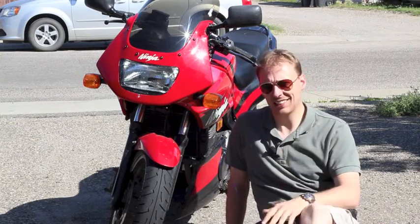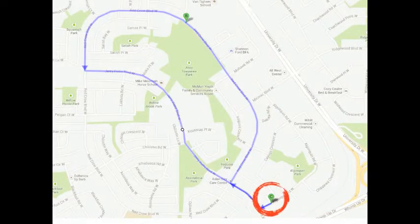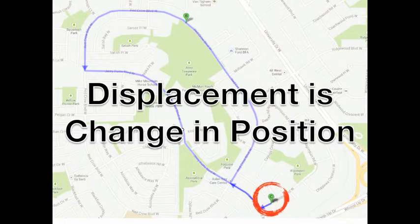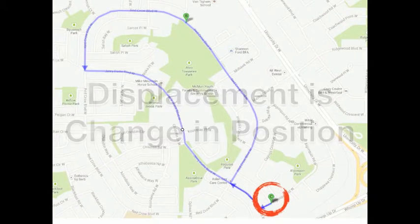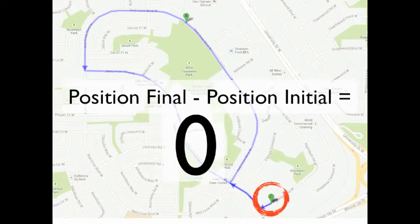I started here and I ended here. We started at location C, went around the loop, and ended at location C. Remember, displacement is the change in position — position final minus initial. Since we started and ended at the same position, when we subtract them we get zero. We had no displacement. Anytime you start and end at the same spot, your displacement is zero.